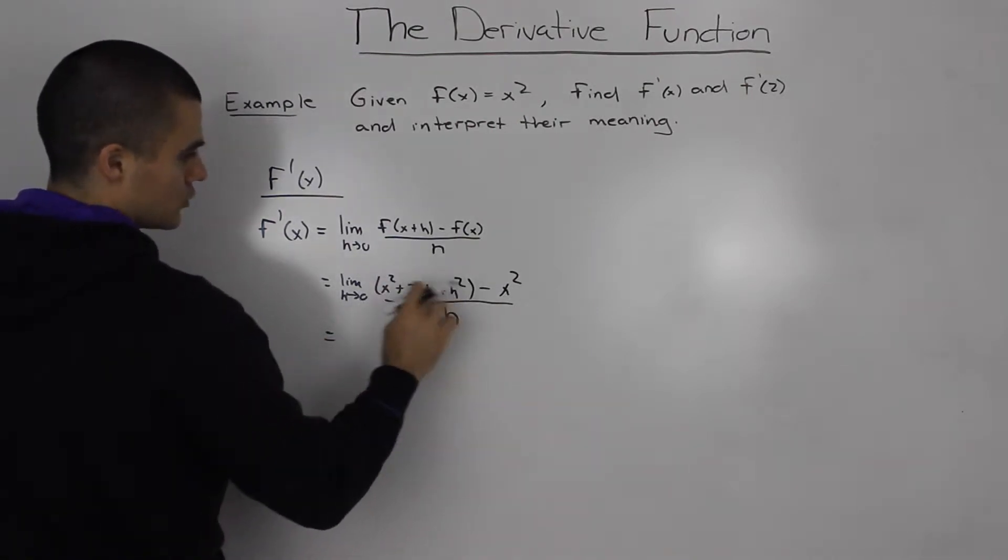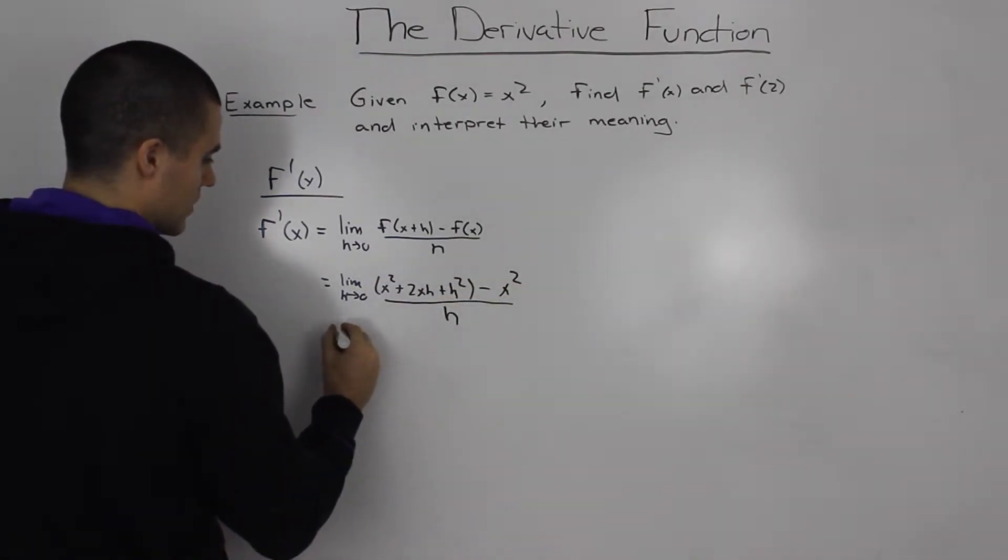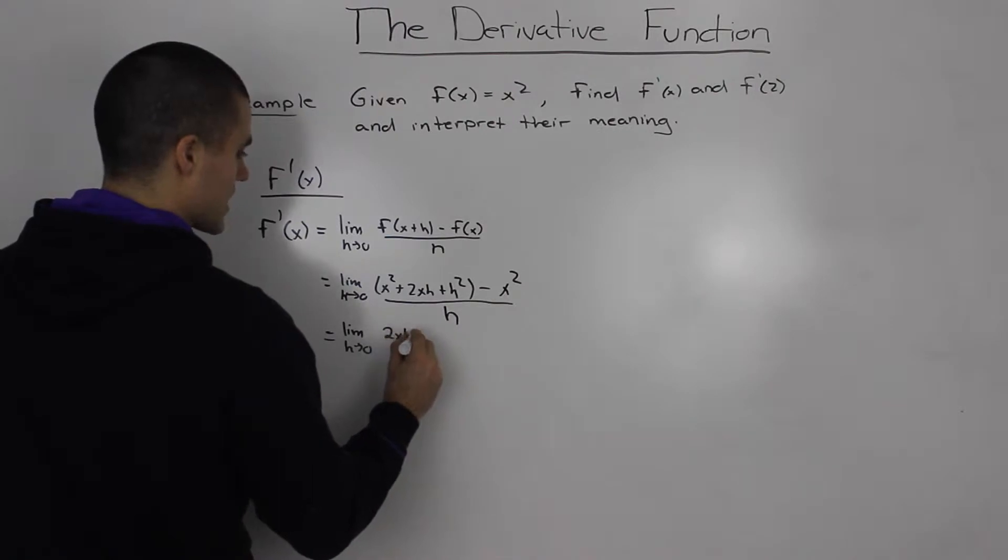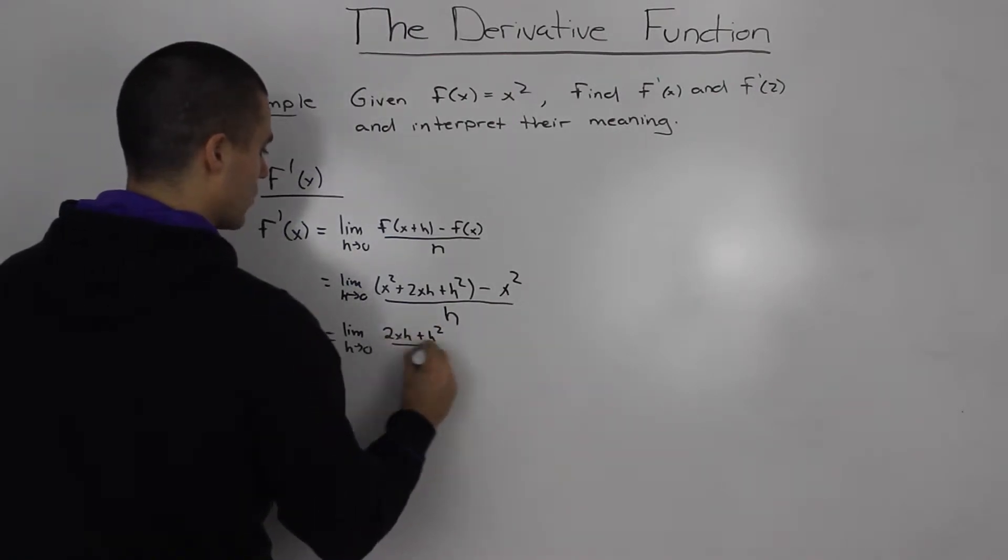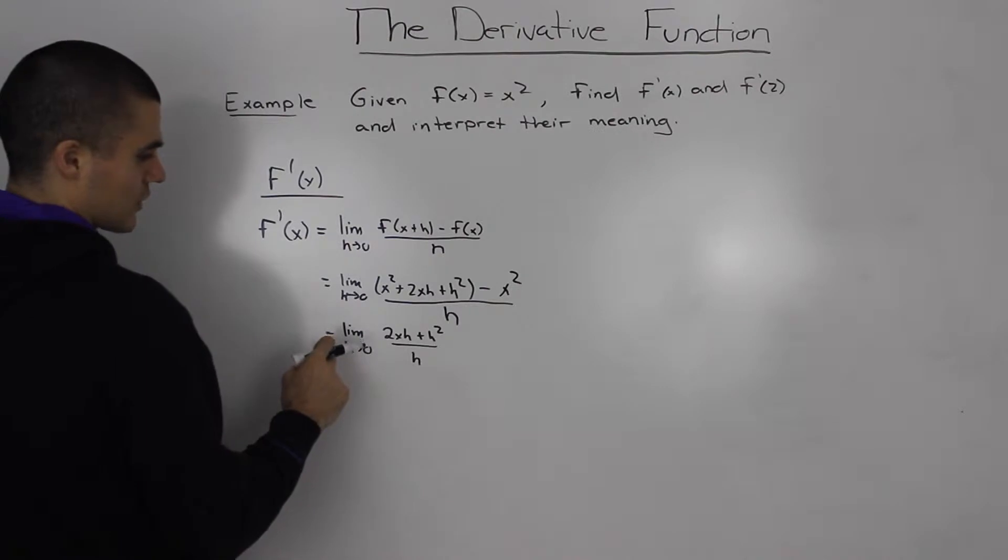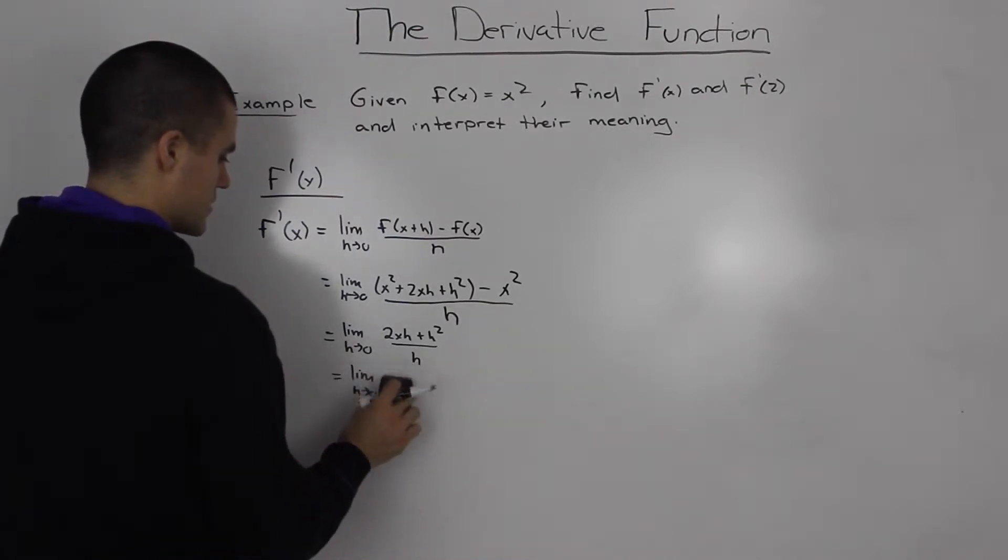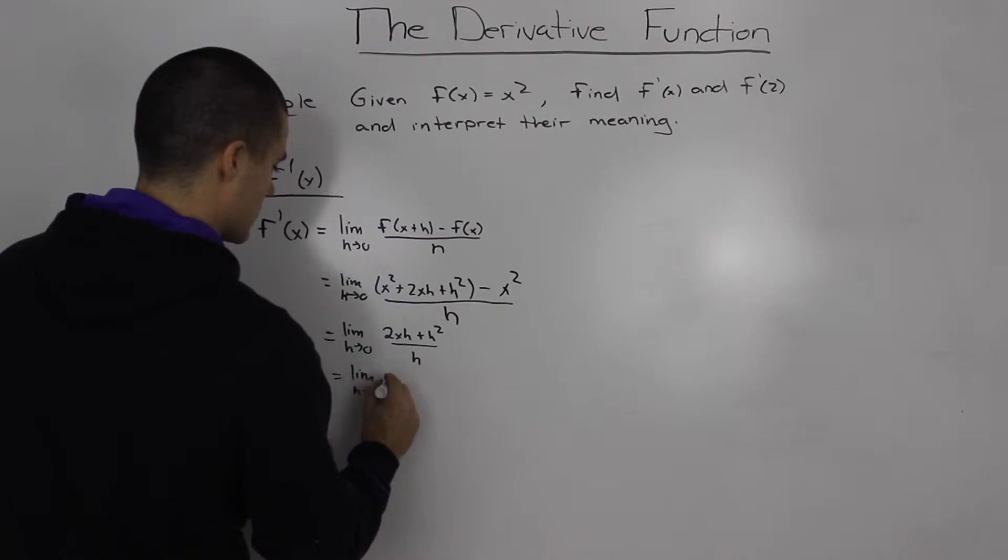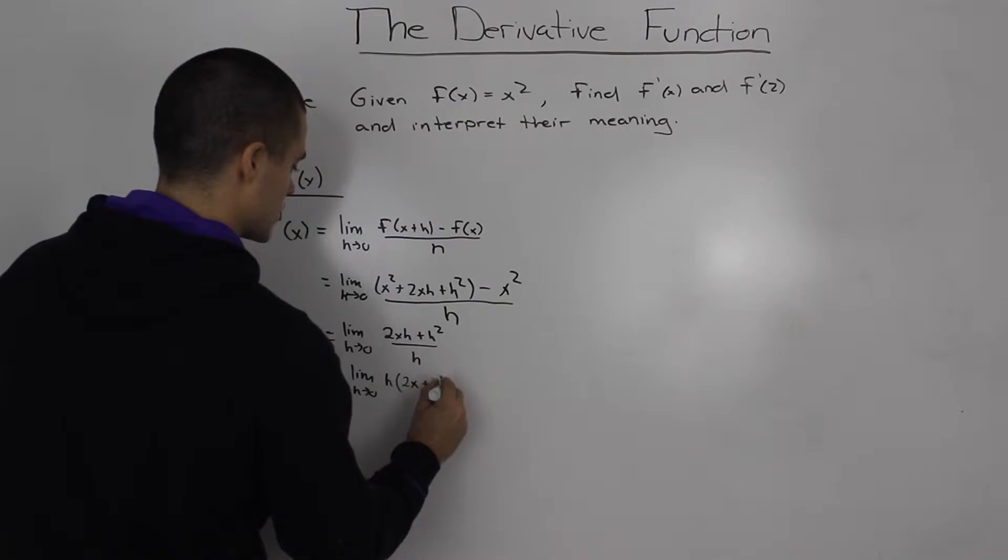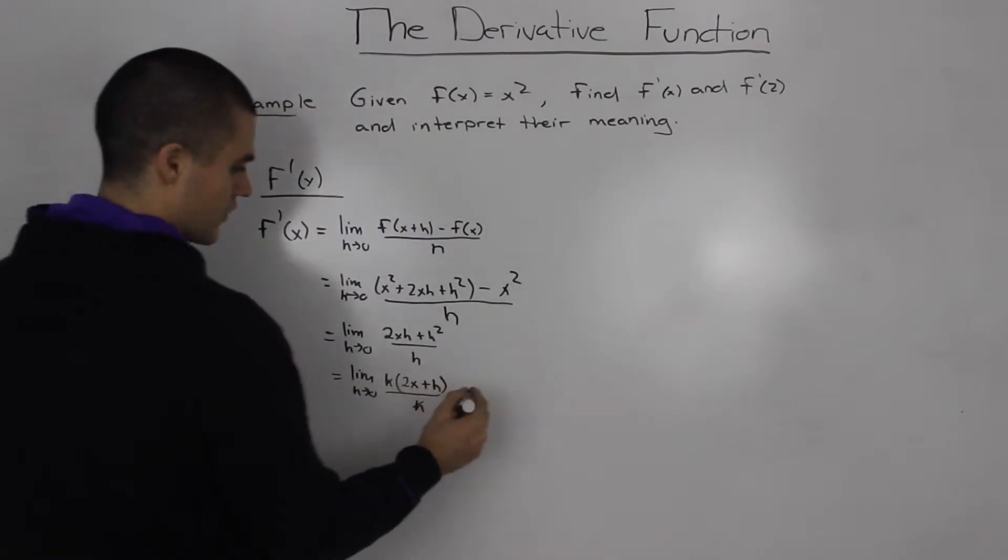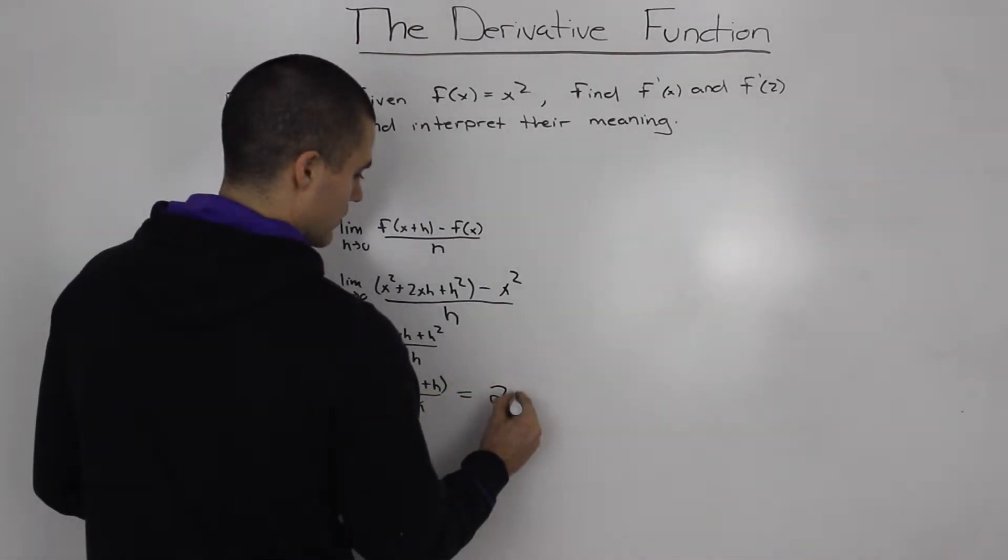And notice how in the numerator the x² terms will cancel out, so we'll be left with the limit as h goes to 0 of 2xh plus h² all over h. If we factor out an h, we'll end up with 2x plus h all over h. The h's will cancel out. If we plug in 0 for h, then we end up with 2x.